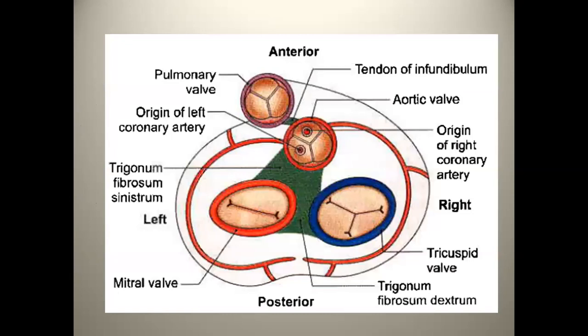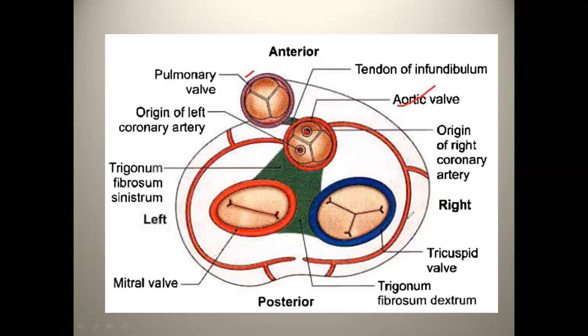Image में हम देखते हैं. इसमें जो होता है — Pulmonary Valve इसमें शामिल नहीं होता है Skeleton में. और ये Aortic Valve, Tricuspid Valve और Mitral Valve — तीनों इसमें शामिल होते हैं. सबसे पहला वाला जो था — हमने देखा — Trigonum Fibrosum Dextrum.